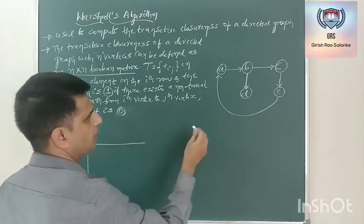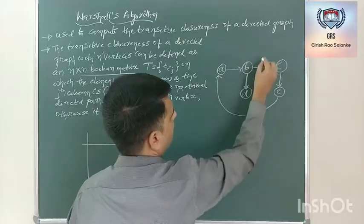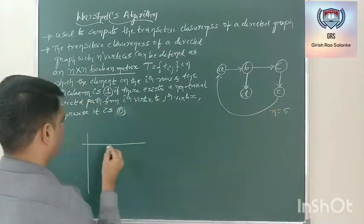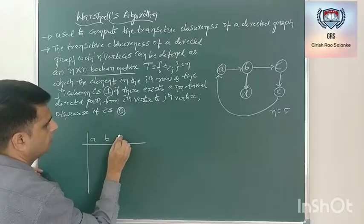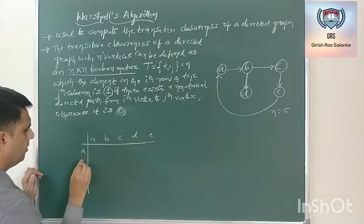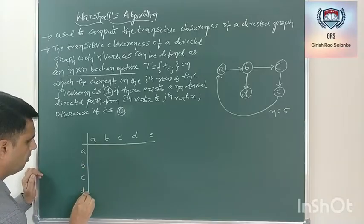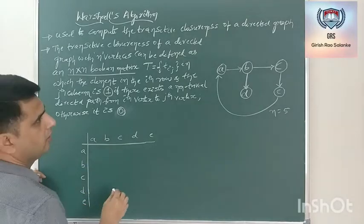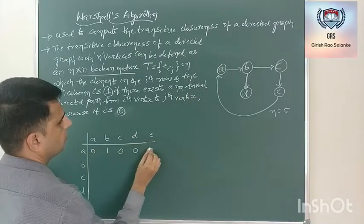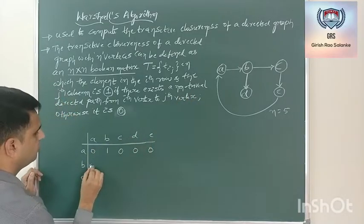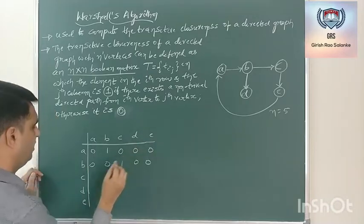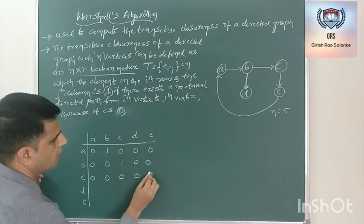The adjacency matrix order has to be n cross n, where in this case if n is 5, the matrix order should be 5 cross 5. The vertices are A, B, C, D, E. There is an edge from A to B — just only one edge. There is an edge from B to C — only one edge. From C, there is an edge to E.